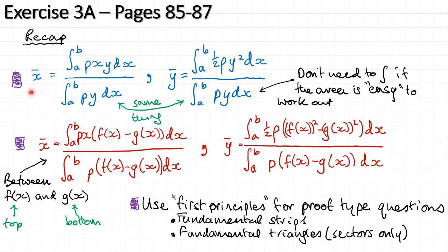You should now be able to do Exercise 3A on pages 85 to 87 of the textbook. As a recap: here are the key formulas for finding the centre of mass of a lamina. Remember, the bottom parts of the x-bar and y-bar formulas are the same — once you've evaluated one, you have it for the other. Also, if the shape is simple enough to calculate the area directly, don't integrate; just write down the area and multiply by rho.